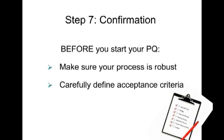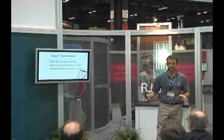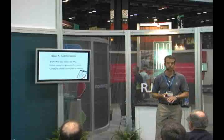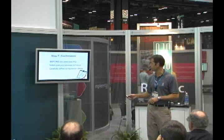We need to make sure that we've developed the OQ phase correctly so that when we get into the production qualification, we're not trying to make continuous adjustments to that process. We get everything squared away, we center our process in the OQ, and our PQ is then our 8-hour or 24-hour run, whatever the case may be.